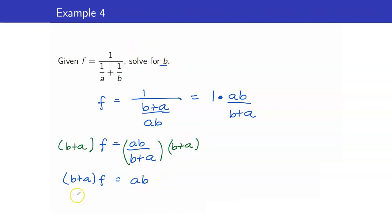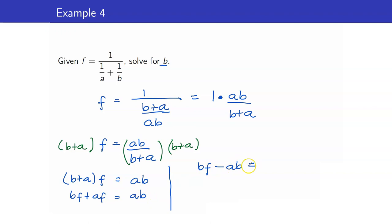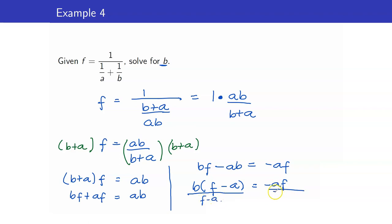Remember, when solving you always have to get rid of parentheses — always distribute. So we have BF plus AF is equal to AB. The next step is to collect all terms involving B. I have BF on the left; I bring AB to this side as minus AB, equal to, and AF goes to the other side as minus AF. Factoring out B, we're left with B times the quantity F minus A is equal to negative AF. Dividing both sides by F minus A, B is equal to negative AF over F minus A.